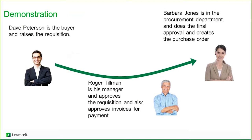Three players or personas are involved in this example. Dave represents the buyer and will raise the requisition — it could be anyone in the company with the ability to purchase indirectly. Dave is in marketing, and Roger is his manager who will approve the requisition, though he could delegate this if he's on vacation. Barbara is in procurement, has final approval, and will create the supporting purchase order.